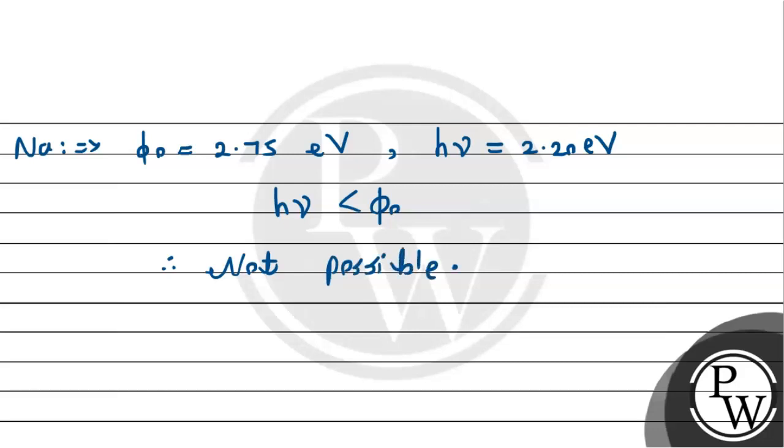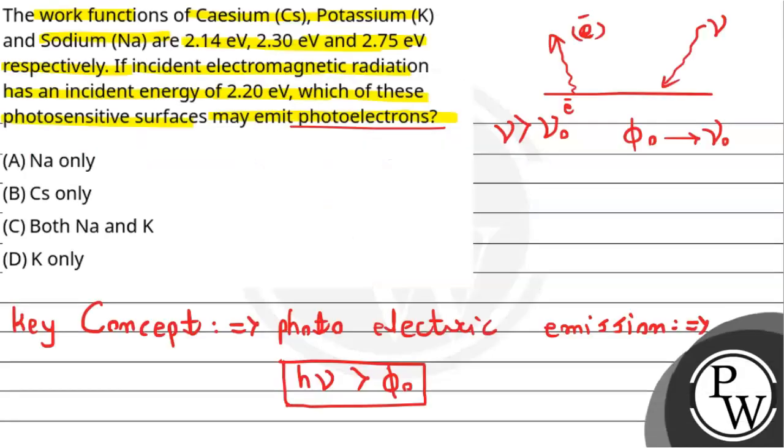Photoelectrons will not be emitted. So we would say not possible for sodium. Only for cesium will photoelectrons be emitted. That is why option B is correct. So this is the required solution. I hope you understand.